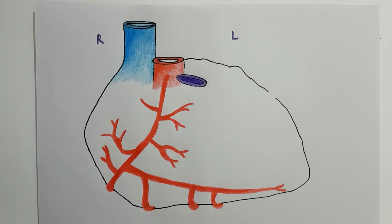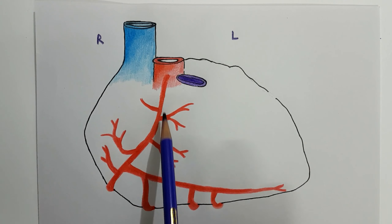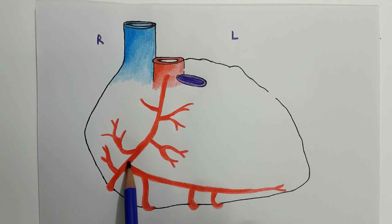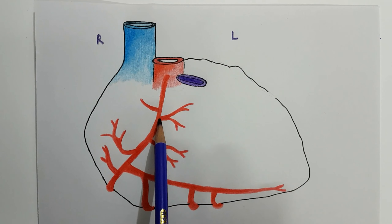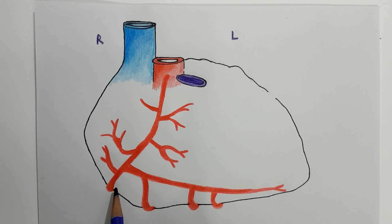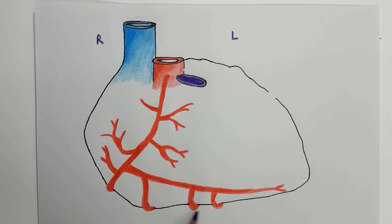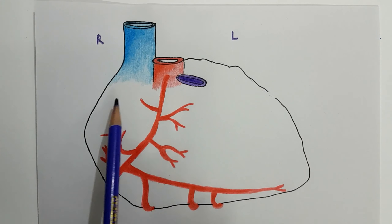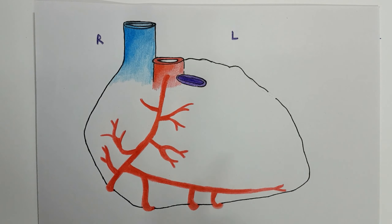After its origination, the right coronary artery passes forwards from the origin between the pulmonary trunk and the right auricle. It then runs downwards in the right anterior coronary sulcus, reaching the junction of the right and inferior border of the heart.